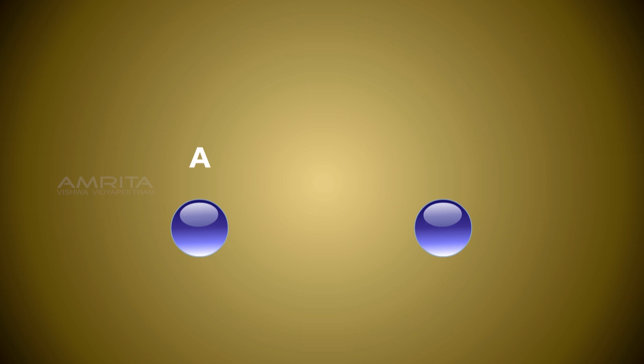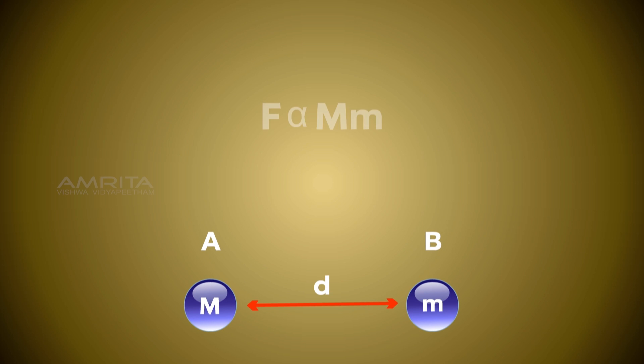Consider two objects A and B and their respective masses as capital M and small m. They lie at a distance d. According to the law, gravitational force F is directly proportional to the product of the masses of two objects A and B.